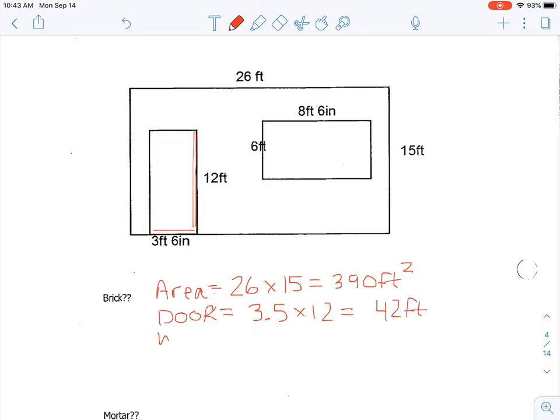And the window—the window is 8 feet 6 inches by 6 feet, but we're using that little cheat sheet, so it's 8.5 times 6, which equals 51 feet squared.